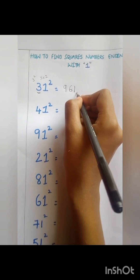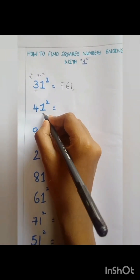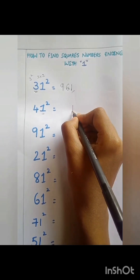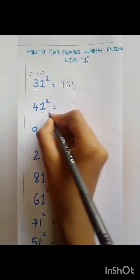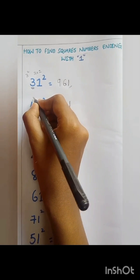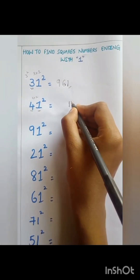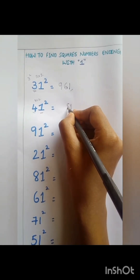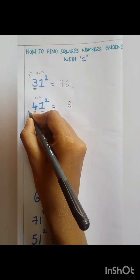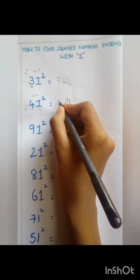Next, 41 squared. The unit digit will be 1. Again, 4 into 2 is equal to 8. Then square the 4, that is equal to 16. Therefore the answer is 1681.